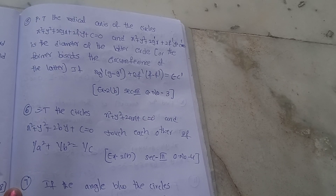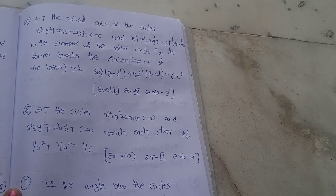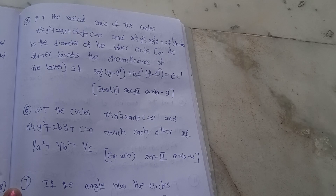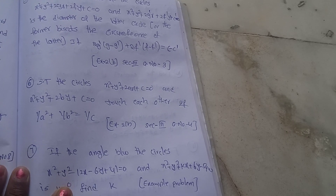Next, prove that the radical axis of the circles x² + y² + 2gx + 2fy = 0 and x² + y² + 2g'x + 2f'y + c' = 0 is the diameter of the latter circle, if 2g'(g − g') + 2f'(f − f') = c − c'. This is Exercise 2B, Section 3, Question 3.